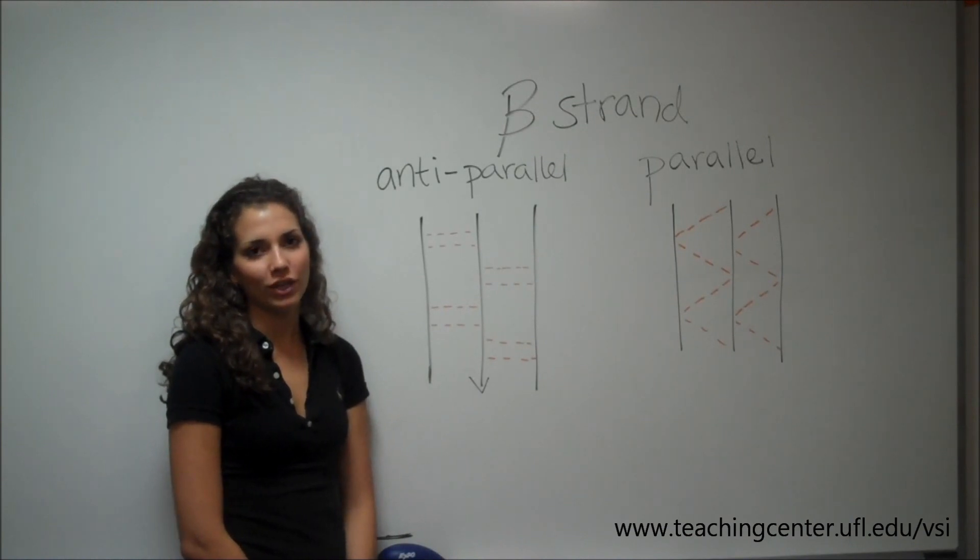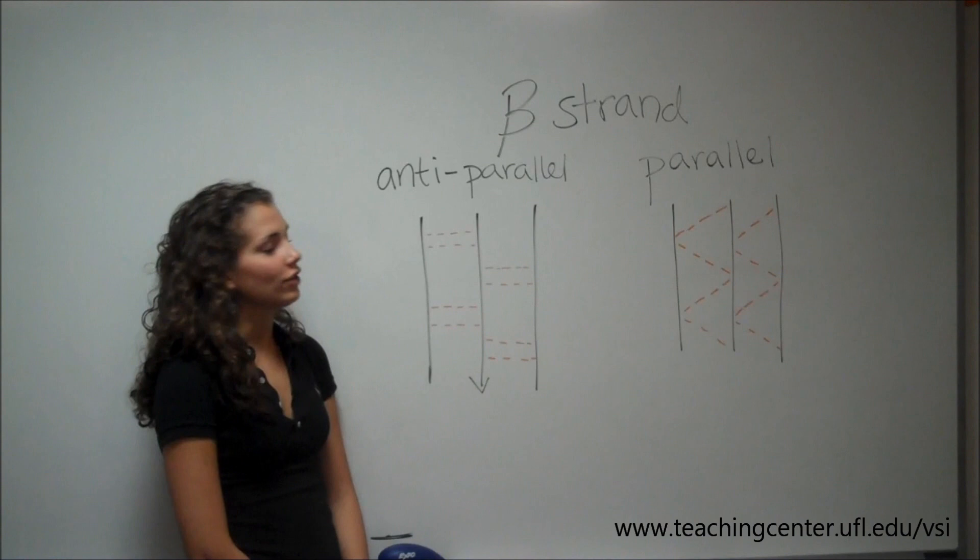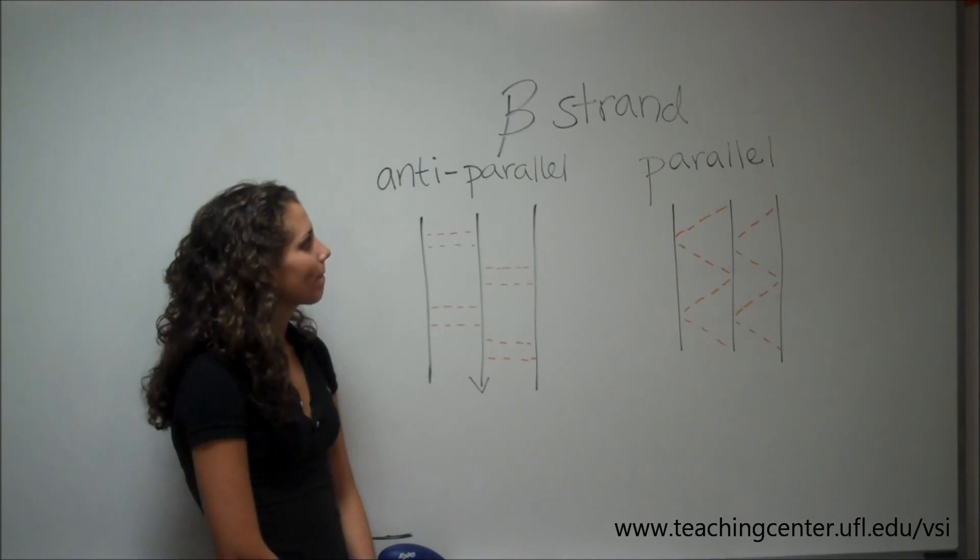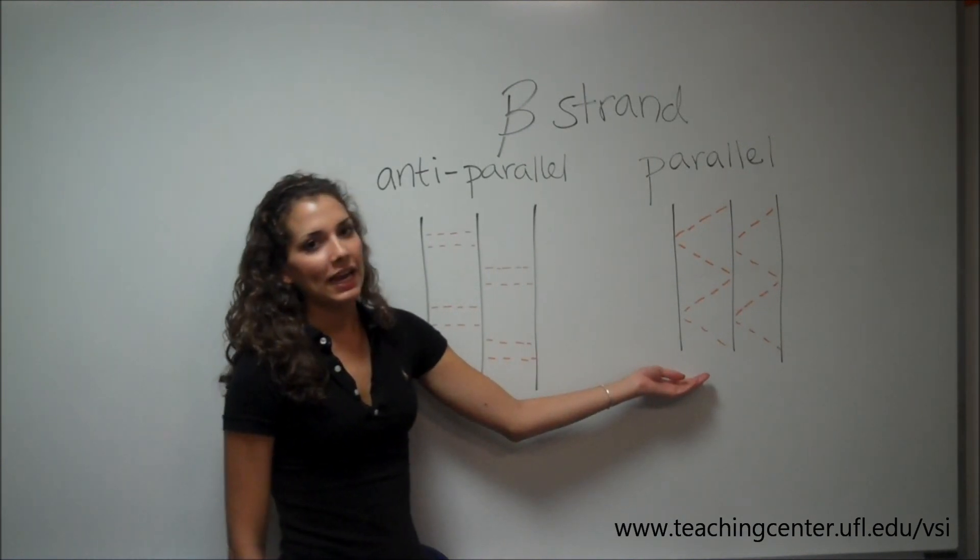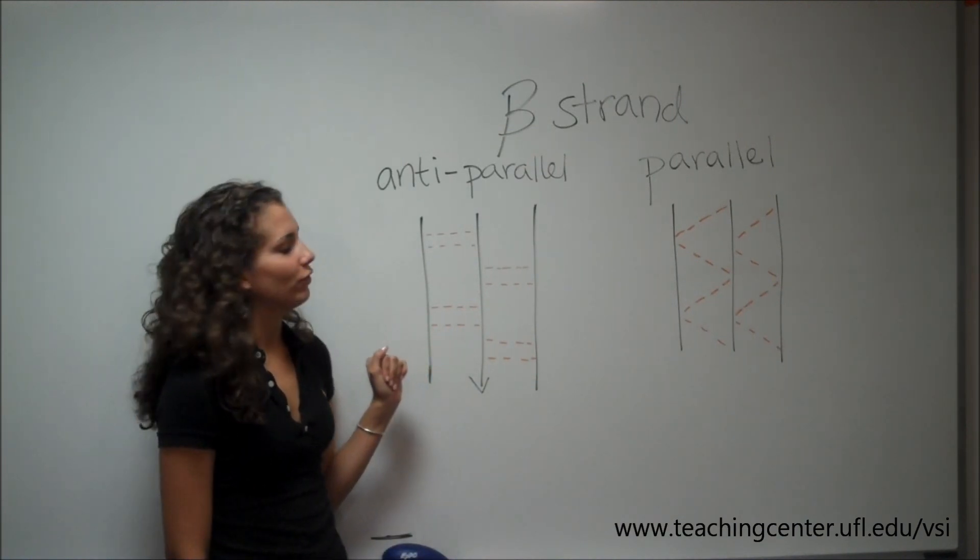The second major secondary structural element you will be responsible for are the beta strands. Now, the beta strands are more extended than the helices, and when they're all put together, they resemble a pleated sheet. Beta strands can be anti-parallel or parallel, and the hydrogen bonds between adjacent strands are visibly different for the two of them.